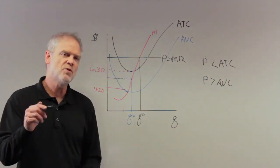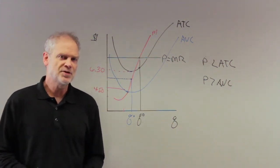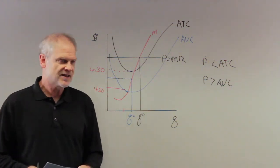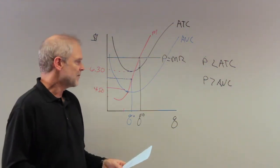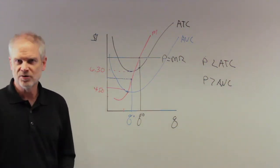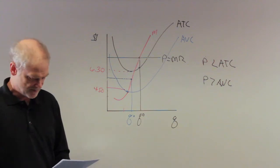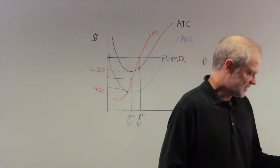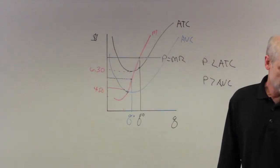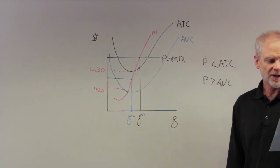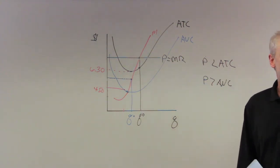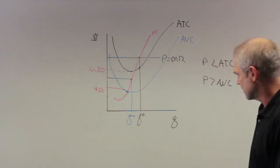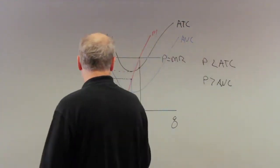One more problem on Figure 14.1, then we'll move to a new sequence of diagrams. Problem 7: refer to Figure 14.1. If the market price is now $4, what happens?